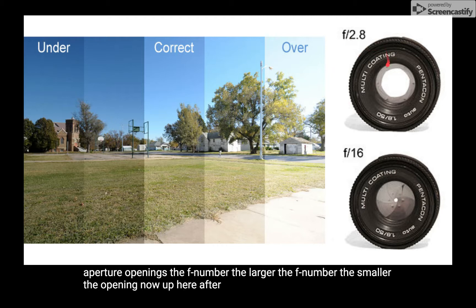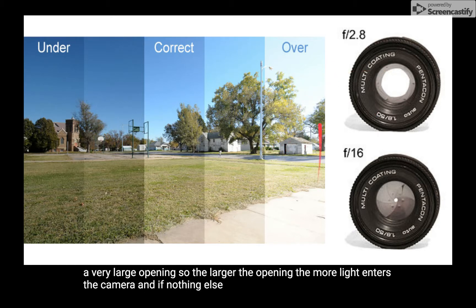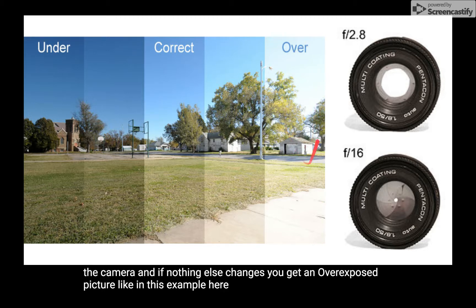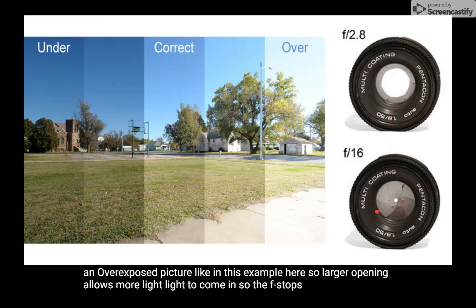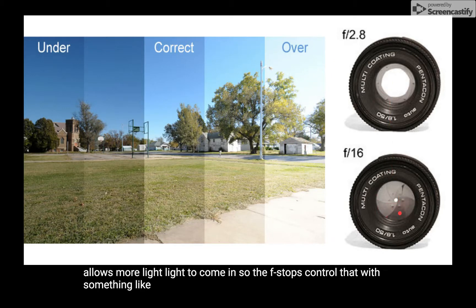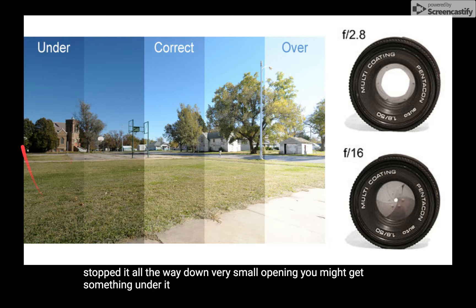F2.8 would let in a lot of light because it's a very large opening. The larger the opening, the more light enters the camera, and if nothing else changes, you get an overexposed picture, like in this example here. With something like F16, if you didn't change anything else but stopped it all the way down, the very small opening might give you something underexposed, like the picture over here.